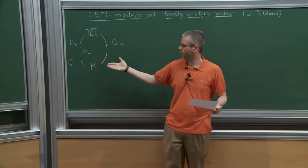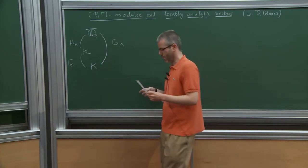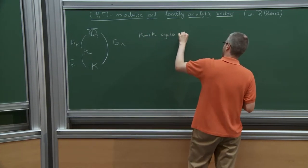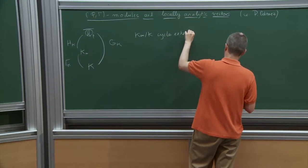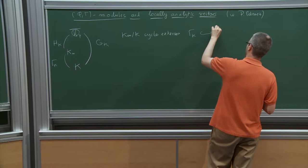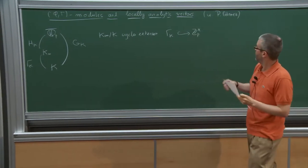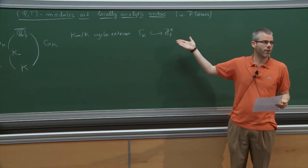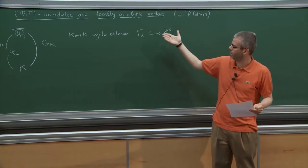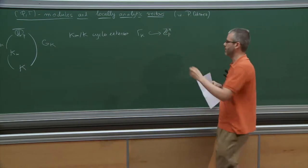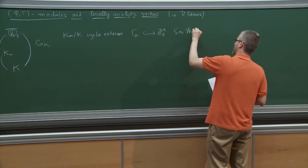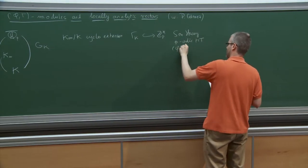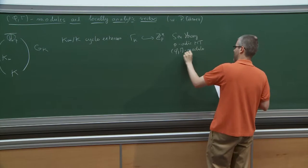This translates into the fact that Q_p-bar over K_∞ is almost totally ramified. Let me denote this Galois group by H_K and this one by Γ_K. We also try to choose K_∞ so that the Galois group Γ_K is as simple as possible. The canonical choice for K_∞ is to take the cyclotomic extension, in which case the cyclotomic character realizes Γ_K as an open subgroup of Z_p^×. Once you have made that choice, you have all the theories in the study of p-adic representations: Sen theory, p-adic Hodge theory, the theory of phi-gamma modules, and so on.